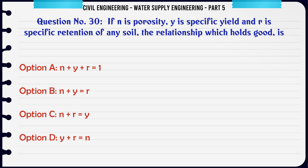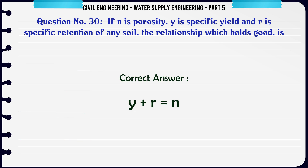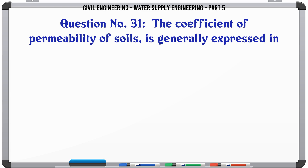If N is porosity, Y is specific yield, and R is specific retention of any soil, the relationship which holds good is: A. N = Y + R - 1, B. N = Y + R, C. N = R - Y, D. Y = R + N. The correct answer is N = Y + R.